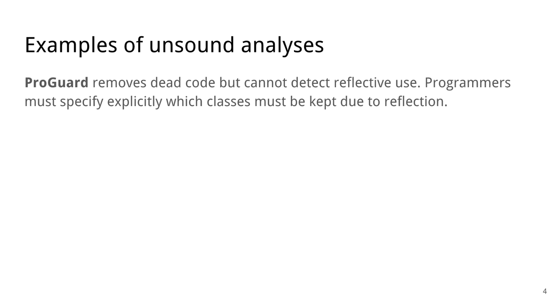There's a tool called ProGuard, which is a tool that optimizes Java code. And ProGuard detects unused classes and removes them. However, it cannot detect the usage through reflection. So if you use a class reflectively and in no other way, ProGuard is going to remove it. That's why ProGuard lets programmers actually declare explicitly which classes must be kept because of reflection.